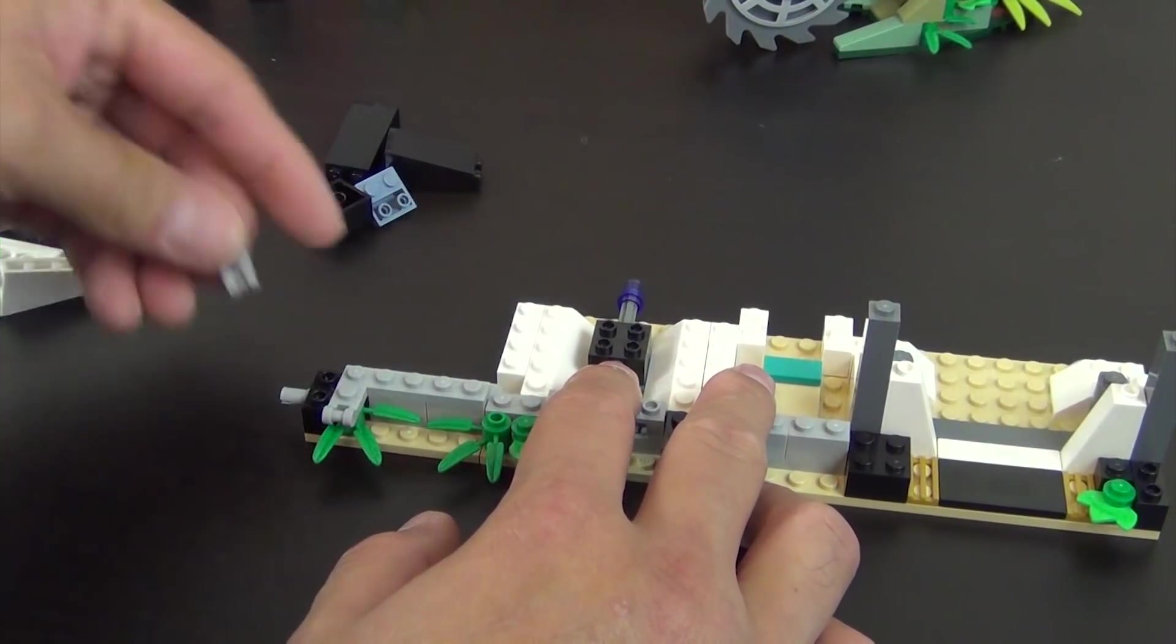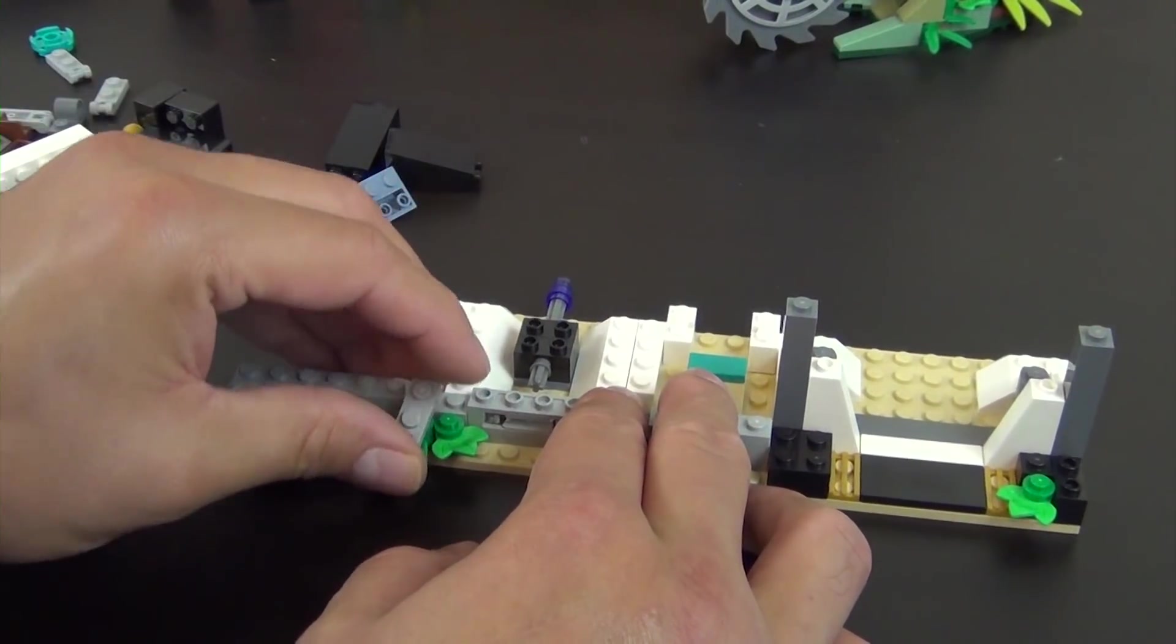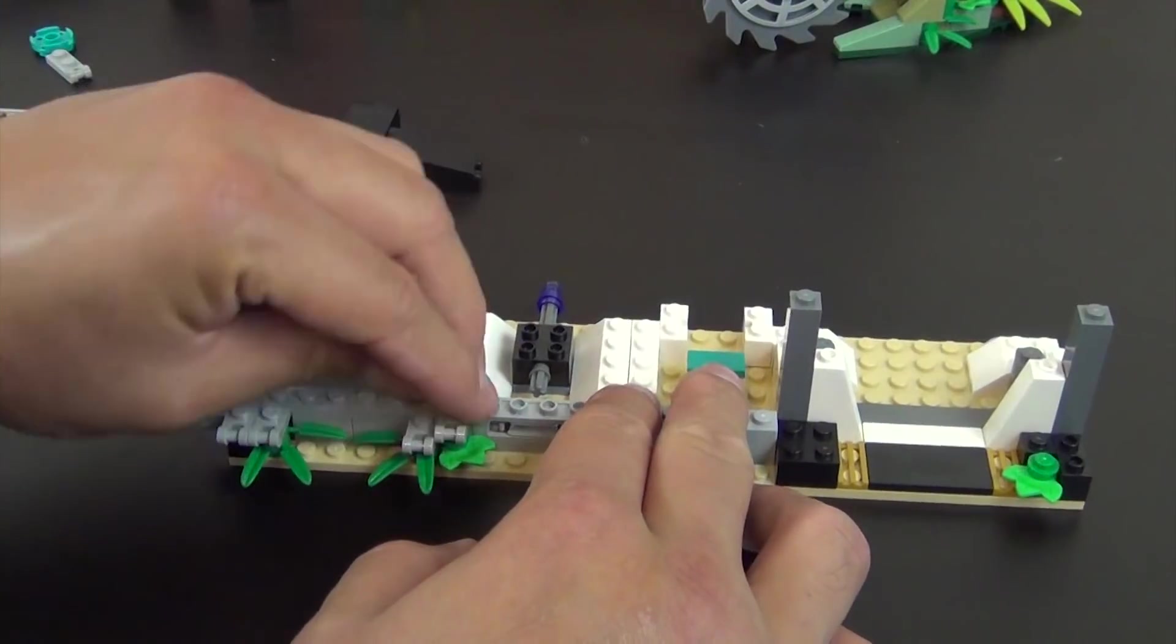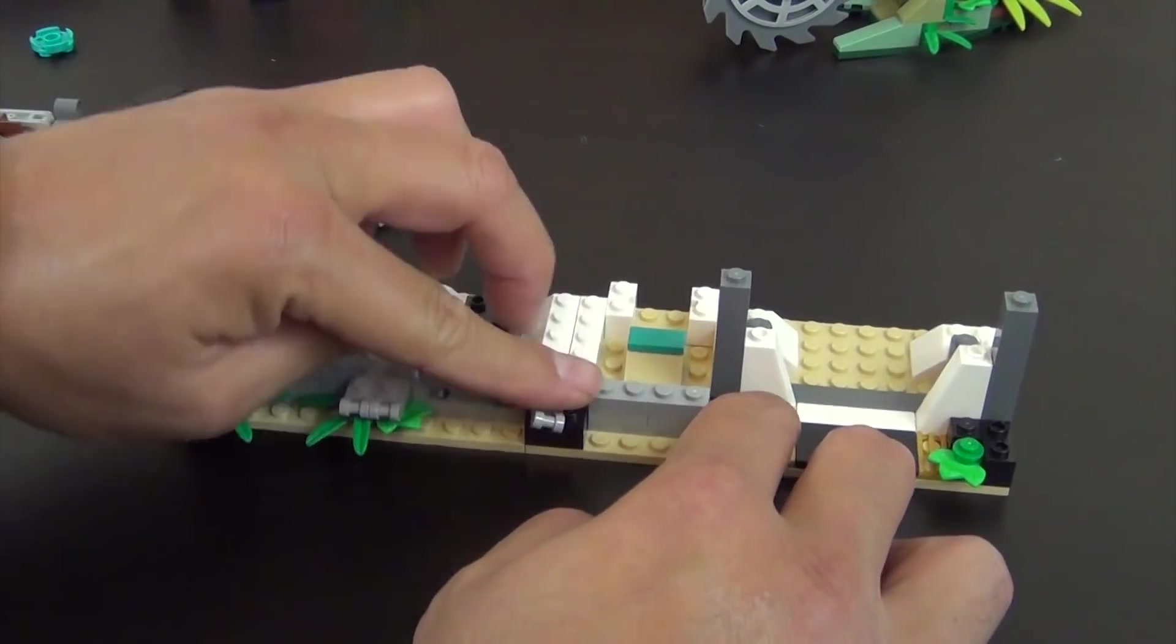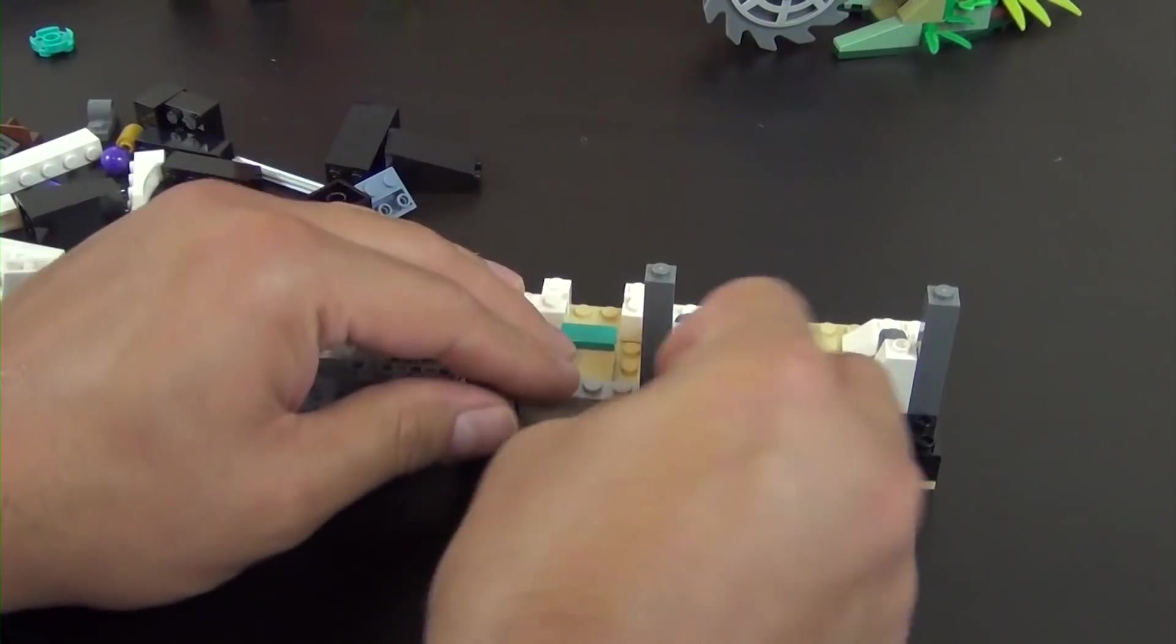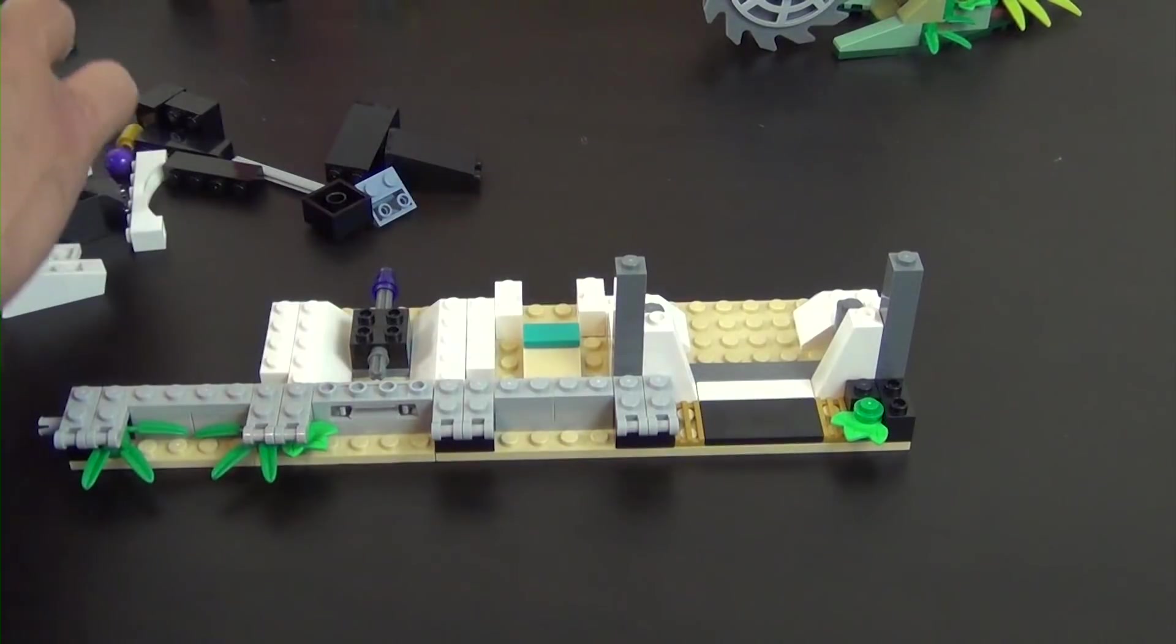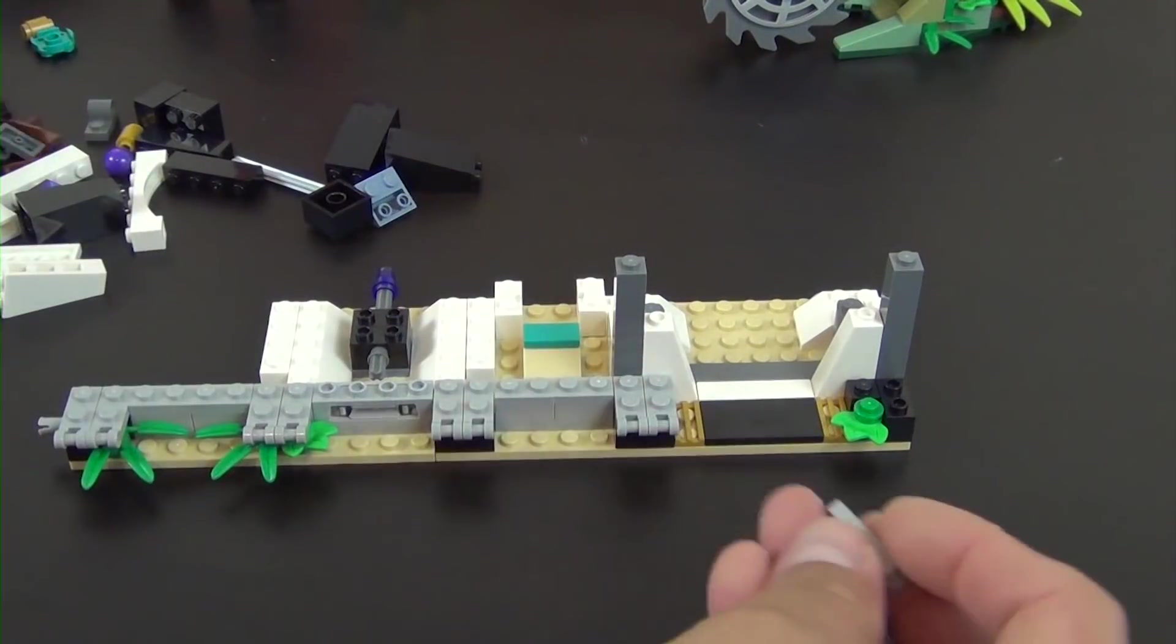Now we put some greenery on the front of this. Another one of our leaf pieces that we're sandwiching in between two green studs.